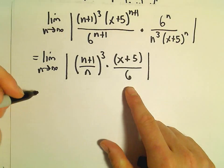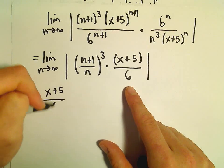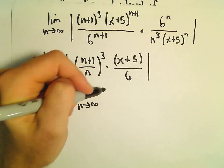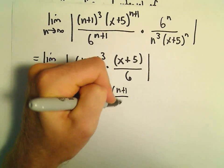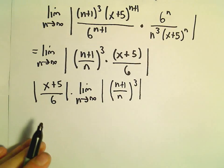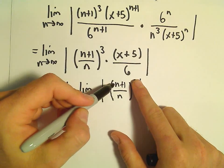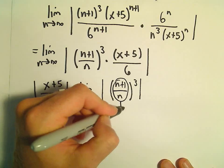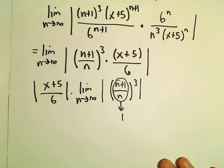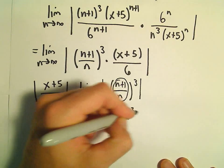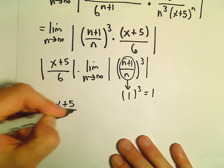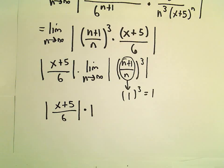We can factor out the absolute value of x plus 5 over 6, and then multiply that by the limit as n goes to infinity of n plus 1 over n, to the third. But as n goes to infinity, n plus 1 over n just approaches 1, so 1 cubed equals 1. So really we've got x plus 5 over 6 times 1 — that's our ratio generically.